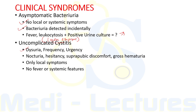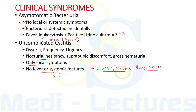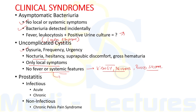The typical symptoms of uncomplicated cystitis are dysuria, frequency, and urgency. Nocturia, hesitancy, suprapubic discomfort, and gross hematuria are often noted as well. In uncomplicated cystitis there are only local symptoms — no fever or systemic features. The presence of fever or systemic symptoms like altered sensorium suggests an invasive infection beyond the bladder, which can involve the kidney, prostate, or bloodstream — i.e., pyelonephritis, prostatitis, or septicemia.